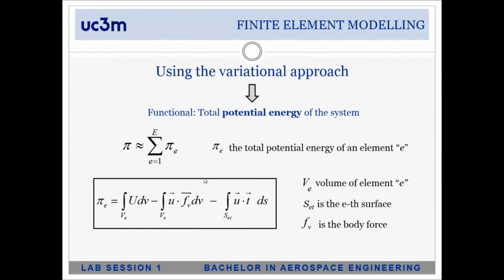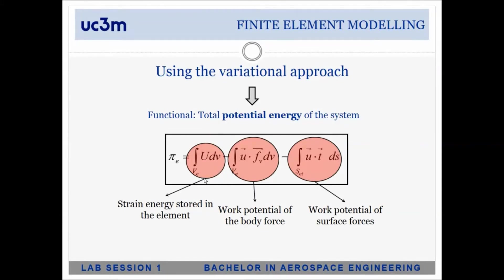The variational approach is probably the easiest to understand and gives the best insight into the physics. For any structure, we may have a potential energy in the system, which is the summation of different kinds of energies acting within our volume. At the element level — wherever you see the subscript E — we first have strain energy stored inside each element. When you apply a force, or stretch or compress a material, you store energy inside it, expressed as an integral of the internal energy over the whole domain.